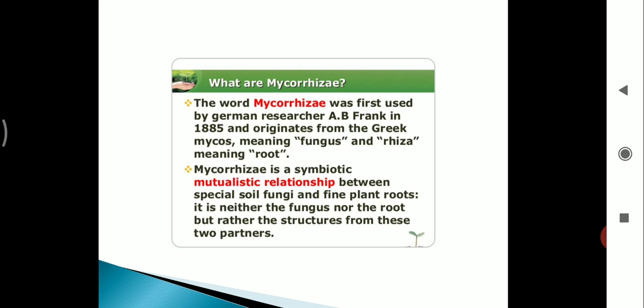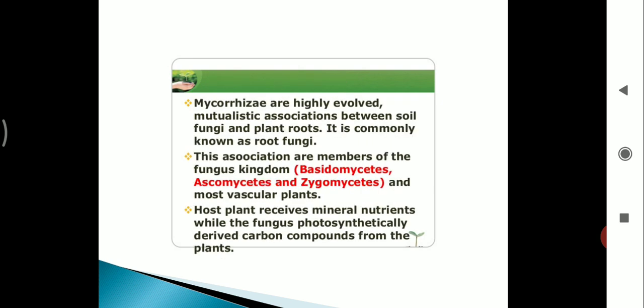Mycorrhizae is a symbiotic mutualistic relationship between special soil fungi and fine plant roots. It is neither the fungus nor the root, but rather the structures from these two partners. Mycorrhizae are highly evolved mutualistic associations between soil fungi and plant roots.